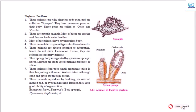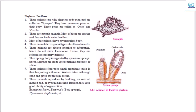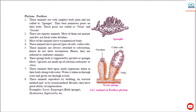Phylum Porifera: These animals have the simplest body plan and are called sponges. They bear numerous pores on their body. Those pores are called Ostia and Oscula. These are aquatic animals. Most of them are marine and few are freshwater dwellers. Most of the animals have an asymmetrical body.